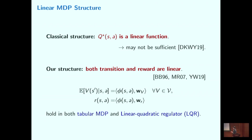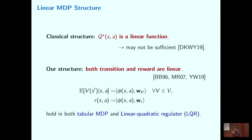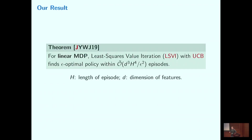Although this sounds like an additional assumption making things less general, it is still reasonably general. It holds for tabular MDPs, so it strictly generalizes that setting. It also holds for the classical control problem LQR, which people have had a lot of interest in. This additional structure is really what we need to guarantee strong positive results.